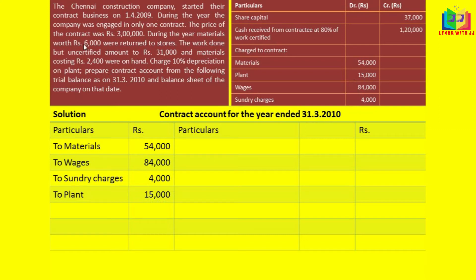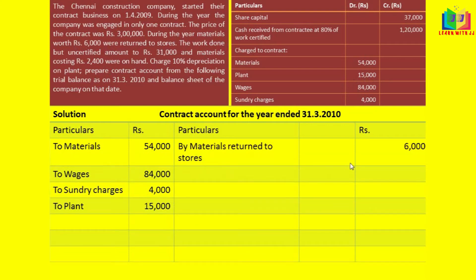During the year, materials worth Rs 6,000 were returned to stores — we will write it on the credit side as materials returned. Next, we have the work done but uncertified amounted to 31,000 and material costing 2,400 on hand. This is the closing balance of material, so we will write it on the credit side as material 2,400. Now we have to write the work in progress.